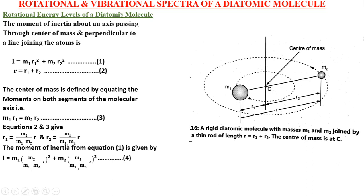First are the rotational energy levels of a diatomic molecule. Consider a diatomic molecule like HCl in which two atoms are separated by a rigid distance R, having masses M1 and M2 as shown in this figure. The lowest energy levels of a diatomic molecule arise from rotation about its center of mass.